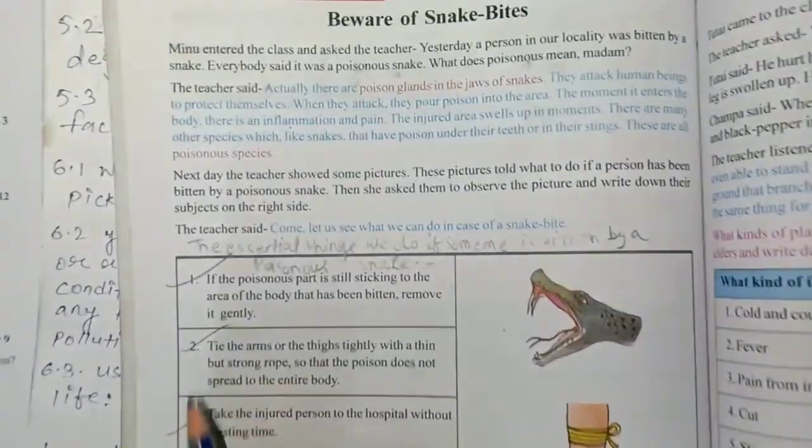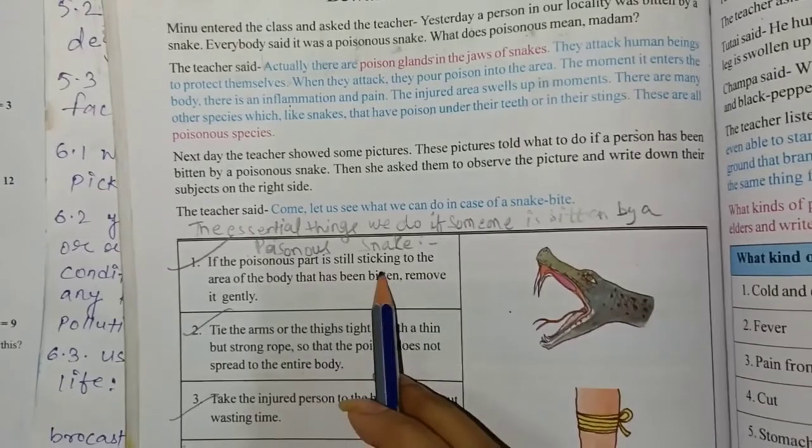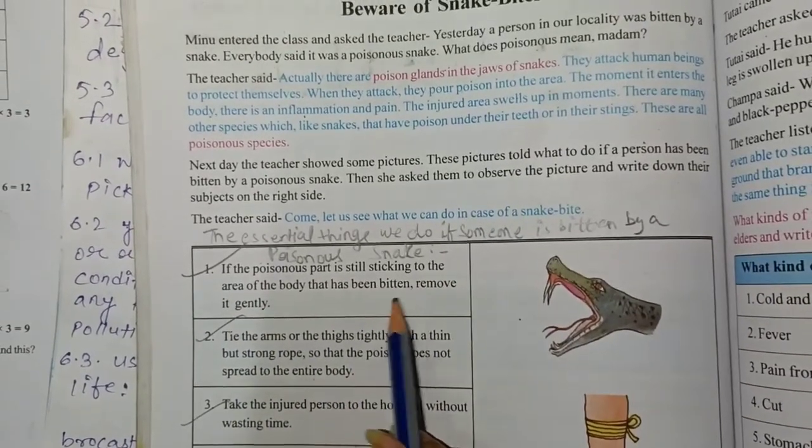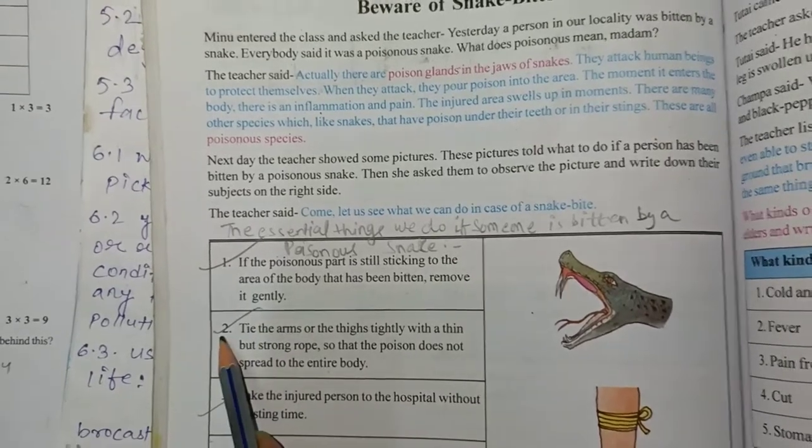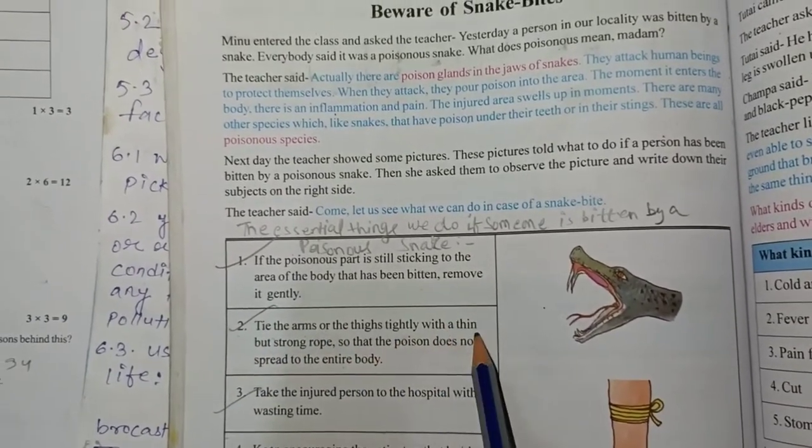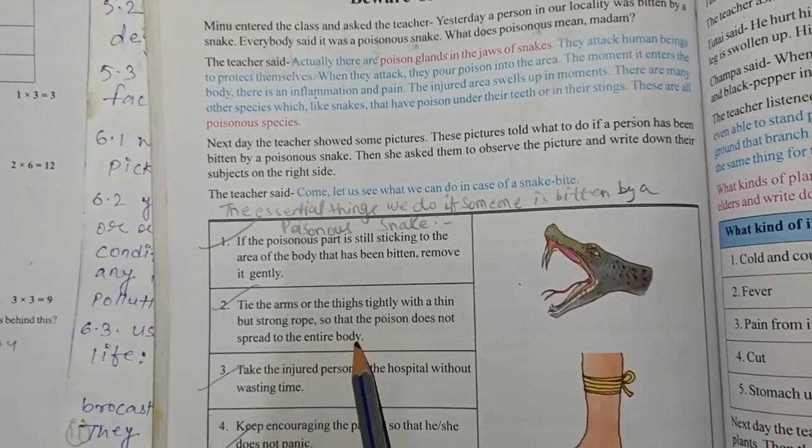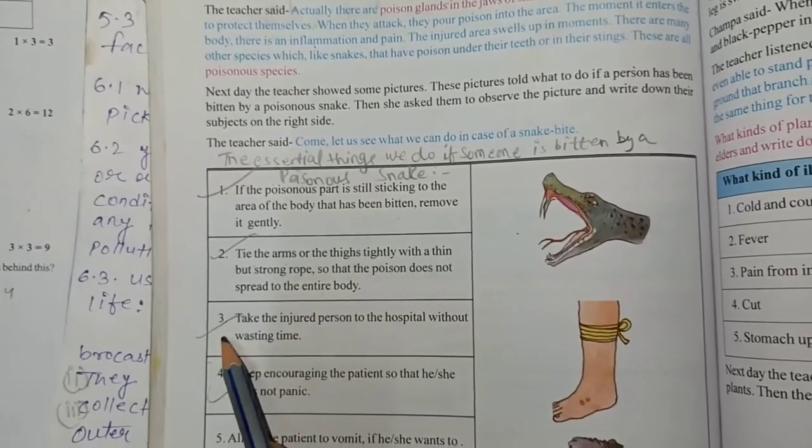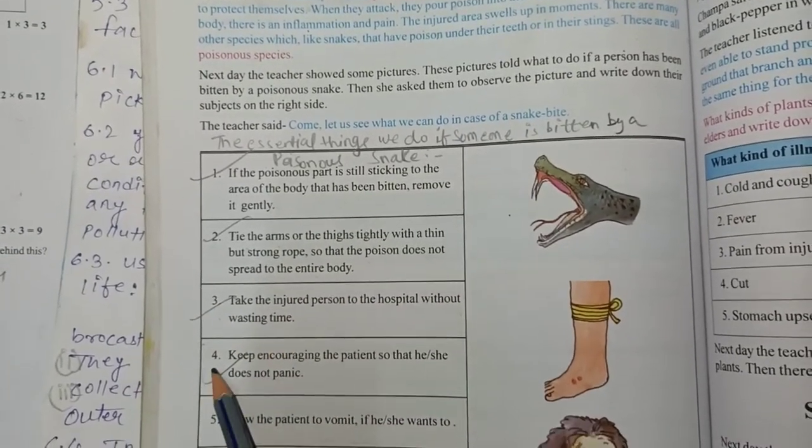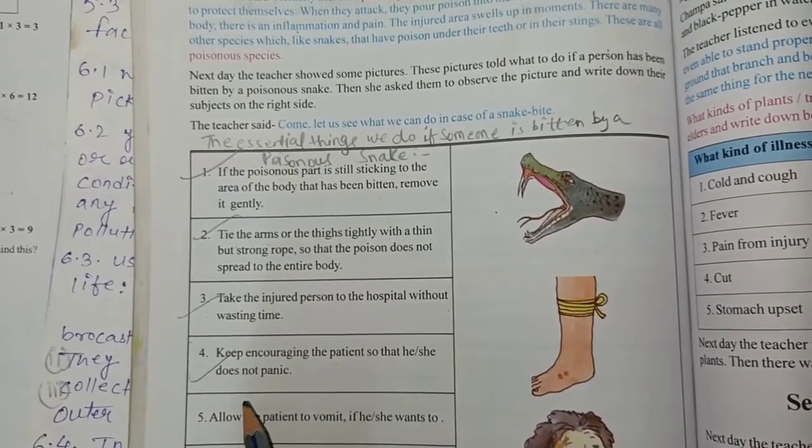Point 1: If the poisonous part is still sticking to the area of the body that has been bitten, remove it gently. Point 2: Tie the arm or the thigh tightly with a thin but strong rope so that the poison does not spread to the entire body. Point 3: Take the injured person to the hospital without wasting time. Point 4: Keep reassuring the patient so that he or she doesn't panic.